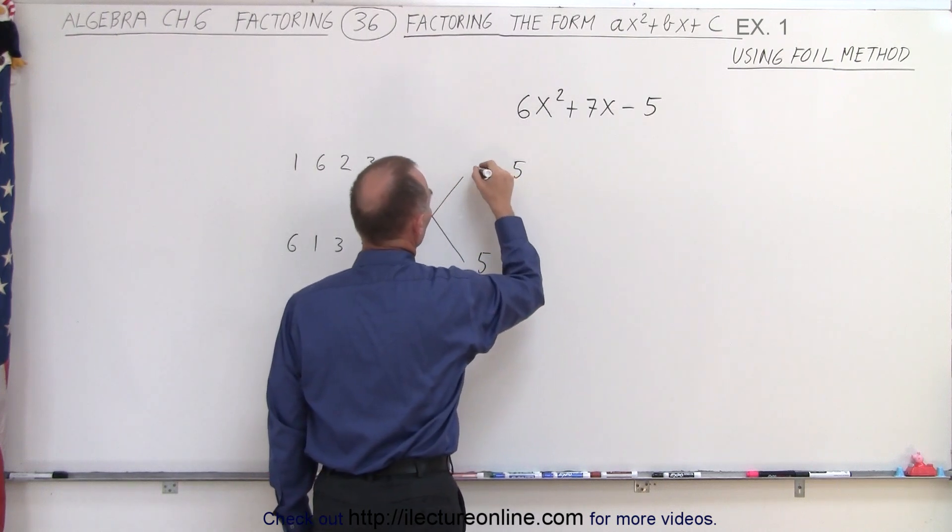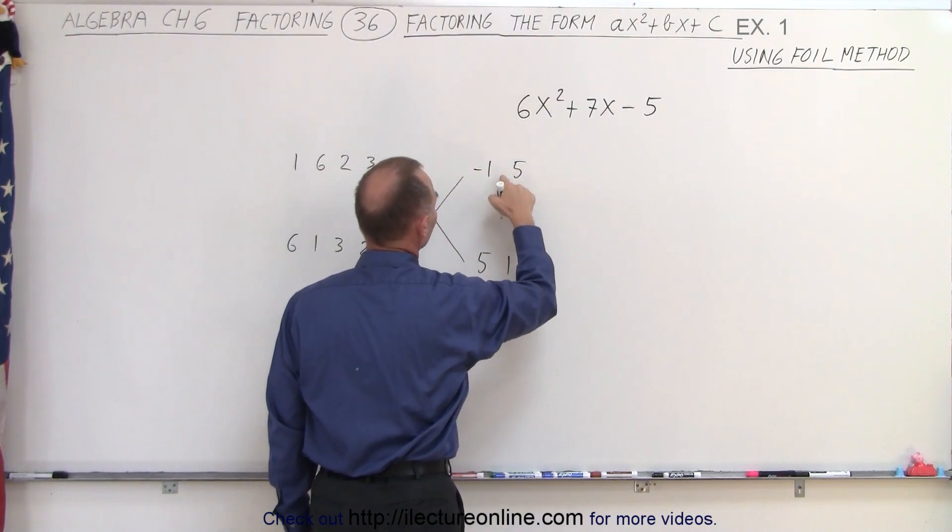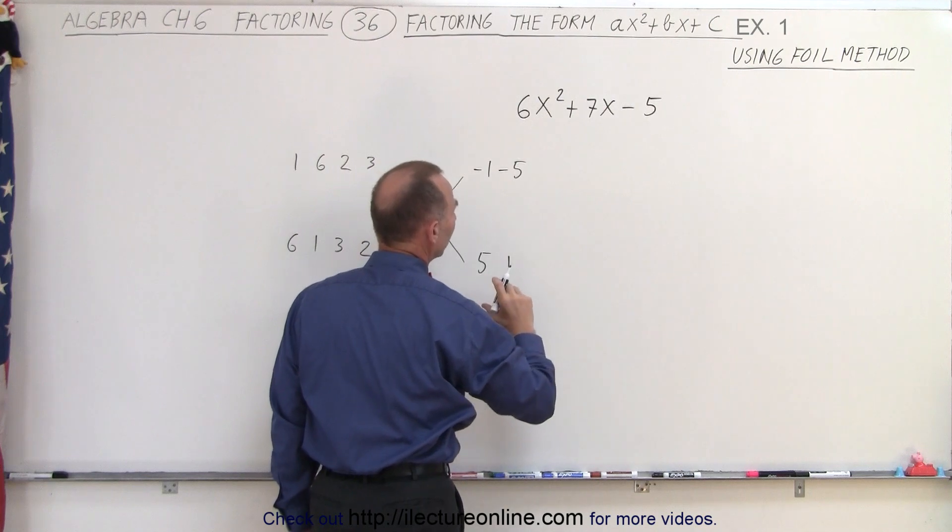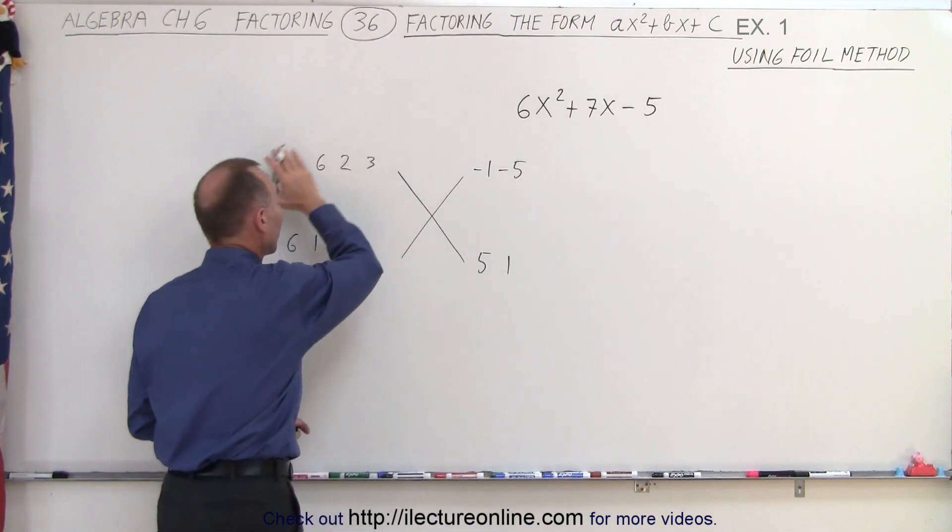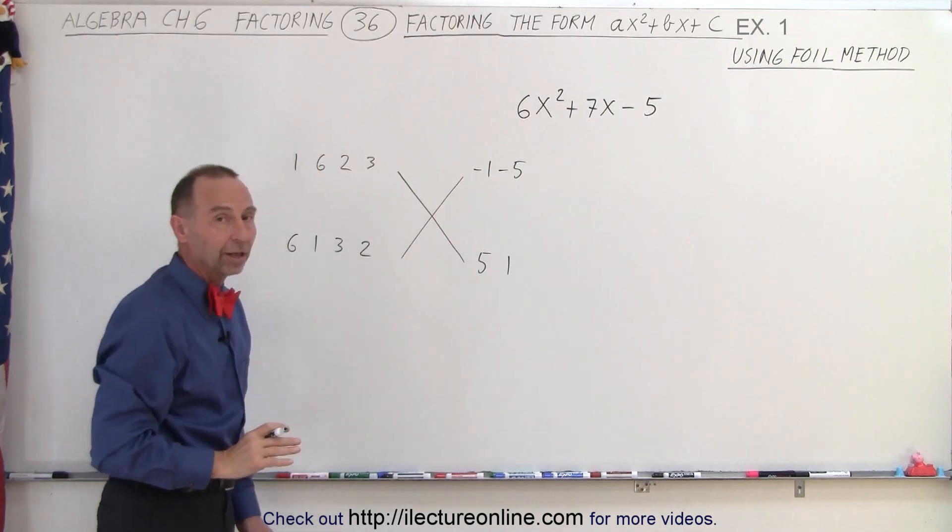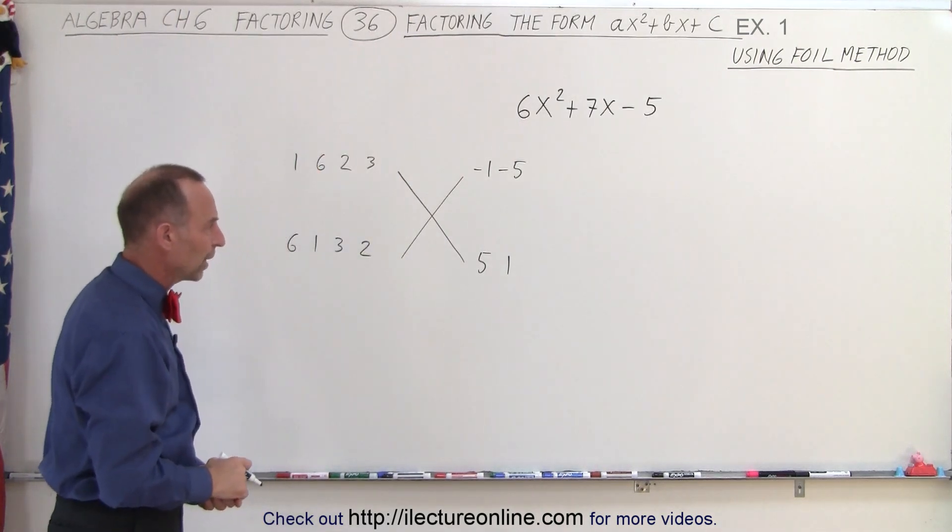And notice, since we have a negative sign there, we can say negative 1, positive 5, or negative 5, positive 1. We could also reverse that, but we don't need to do that because we have all the possible combinations on the left side, so we're good to go.